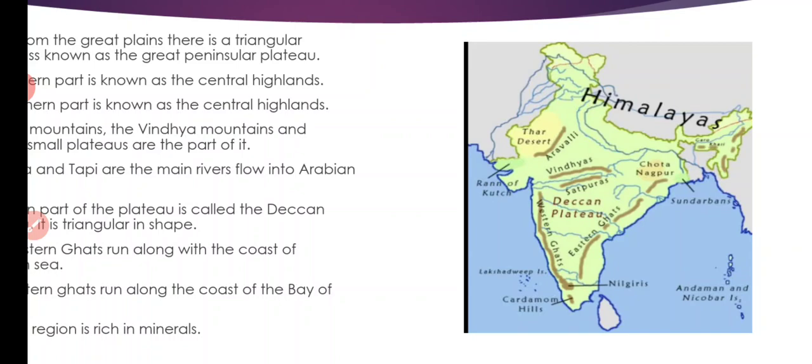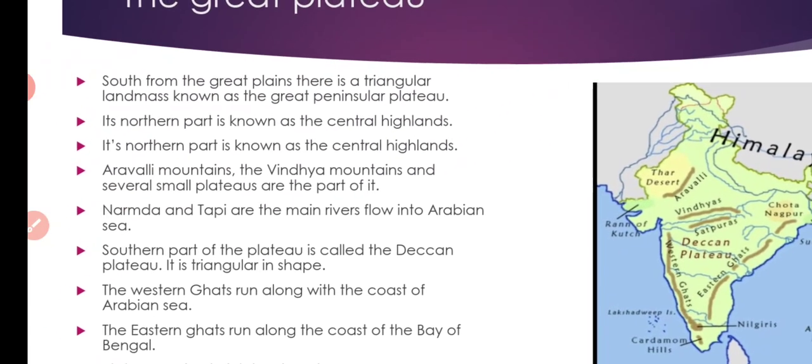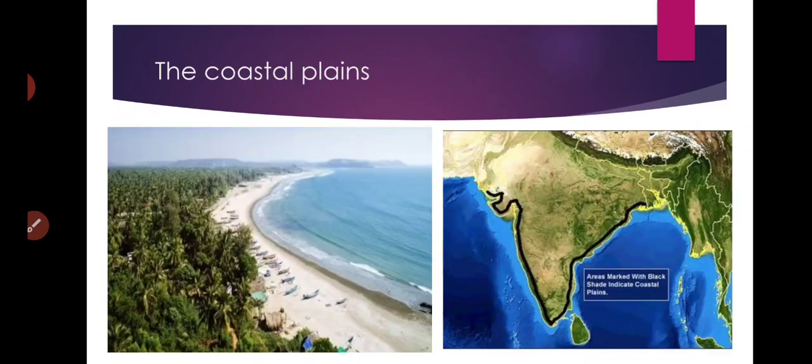Next is coastal plains. Coastal plains — you can see here the sea coast. Sea ke paas ka area coastal plains hota hai. That area is covered by forest — that is coastal plains. And in the map you can see the dark black line that shows us the coastal areas — yeh black line aapko coastal plains show kar rahi hai.